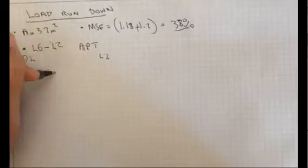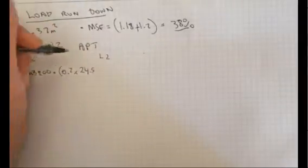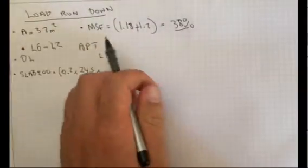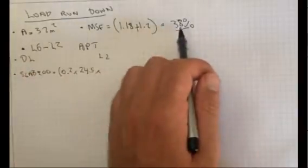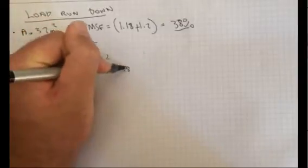Here the dead load will have a typical slab of 200 for an apartment, which equals 5 kPa. That's 0.2 times the depth times the density, which is 24.5, times the area times the extra load. We've got the simply supported area multiplied by the moment shear factor extra: times 37 times 1.38.